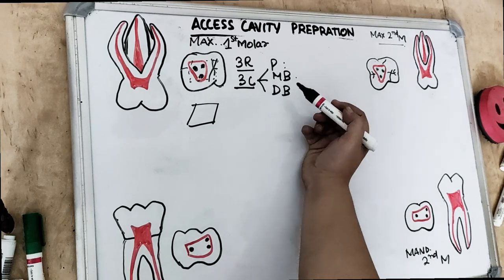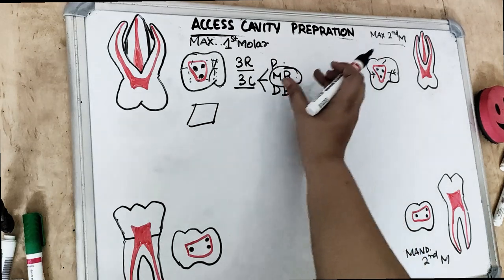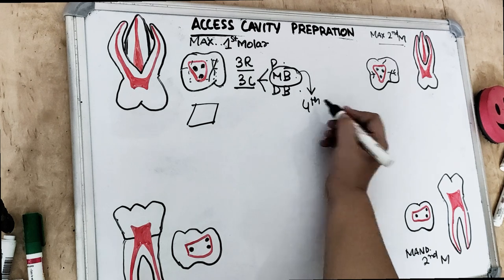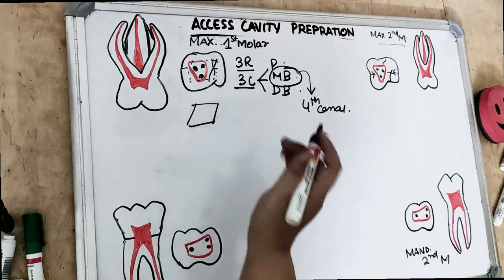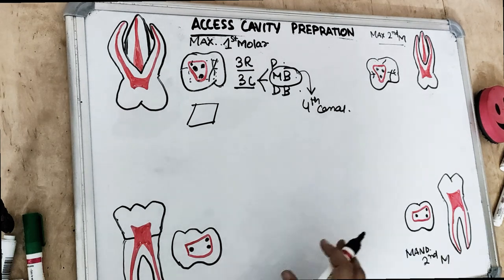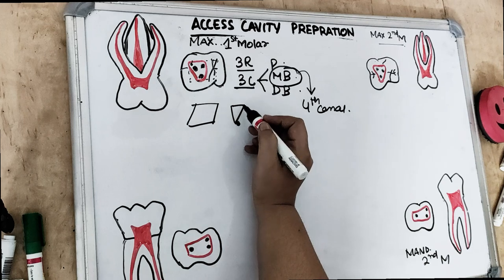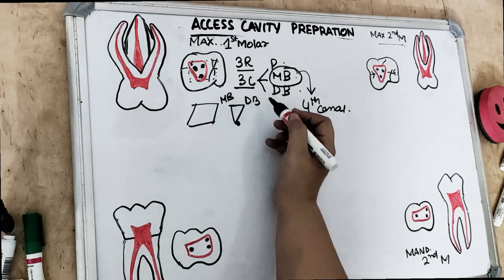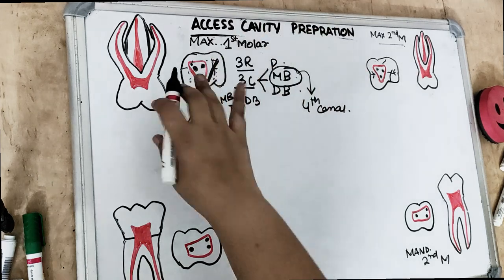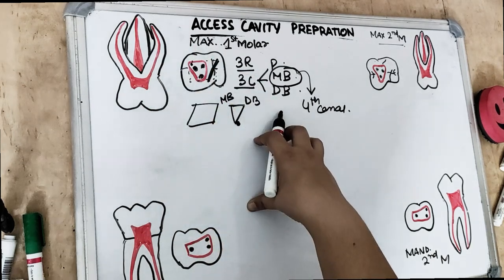The three canals are palatal, mesiobuccal, and distobuccal. The mesiobuccal canal is the largest canal. There may sometimes be a fourth canal present in the mesiobuccal root — on the palatal side of that root. The access cavity is triangular with the apex at the palatal region and base at the mesiobuccal and distobuccal. It does not cross the oblique line. There are also lateral canals present in the apical area as well as in the furcation area.